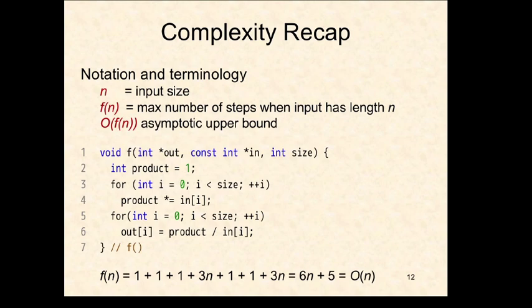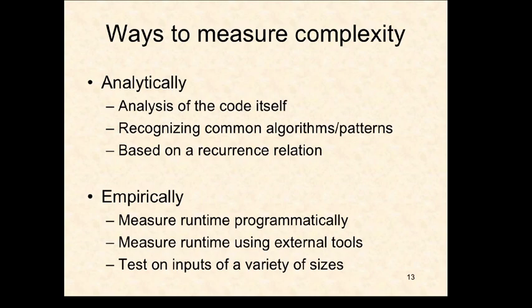We're going to talk about complexity today - how many steps it takes to run some code. We can look at complexity either analytically, working out the Big-O notation or recurrence relation, or we can look at it empirically by creating a program and timing it. In this class we tend to do both: think about complexity before writing the code, but also do empirical testing with actual data to get a real estimate of how long our code takes.